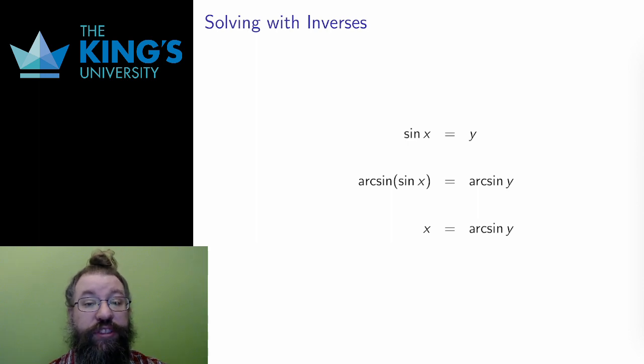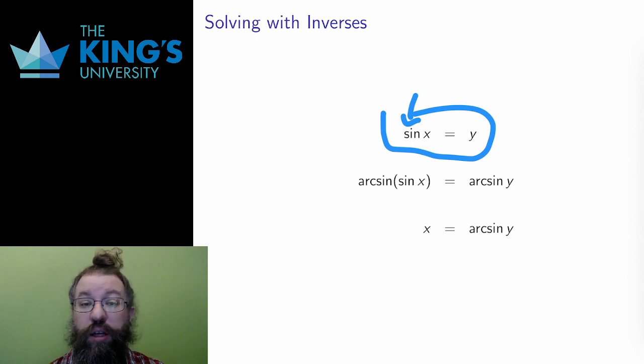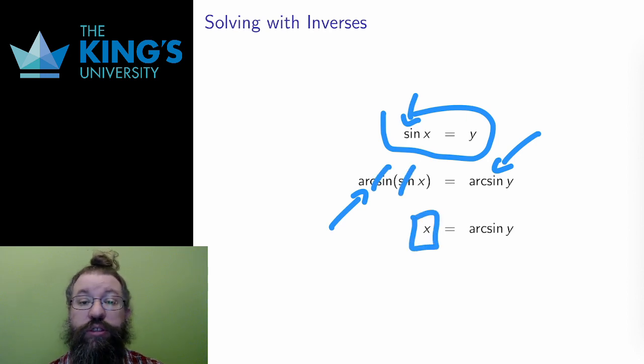Similarly, if I have sine x equals y and I want to isolate the x variable, I need to get rid of the sine function. Again, I can't just divide it away or anything, since it is a function acting on x. The only way to get rid of it is through its inverse, arcsine. I apply the arcsine function to both sides of the equation. On the left, I have the composition of sine and arcsine, these are inverses, so they cancel each other out, and I get the equation x equals arcsine of y. This is the only way to get rid of the sine when solving an equation.